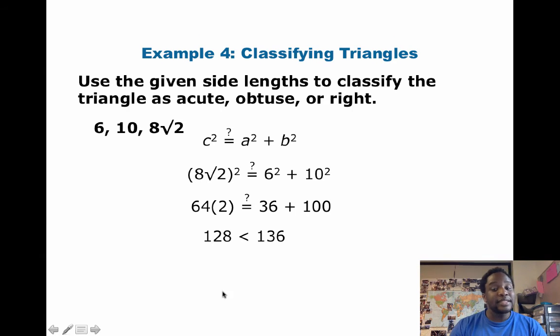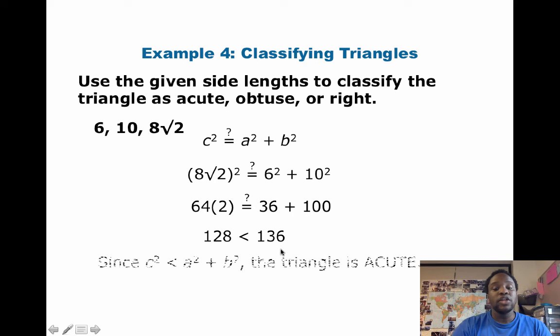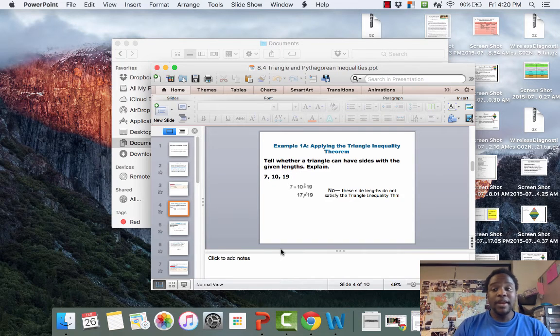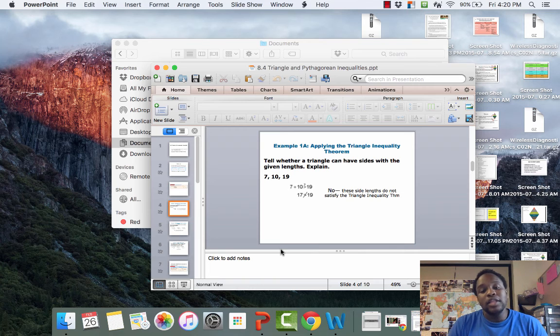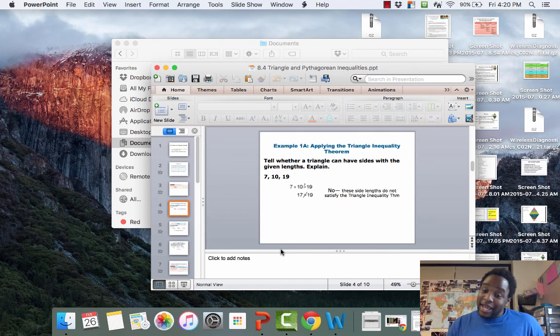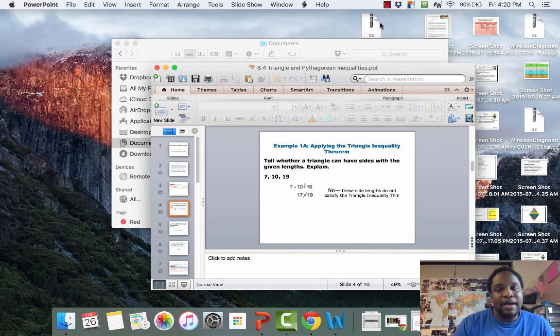So, since c squared is less than 136, then this is an acute triangle. And that is it. Go on, try on the online quiz and please attempt it at least twice before coming to class. Try it, and see you later. Goodbye.